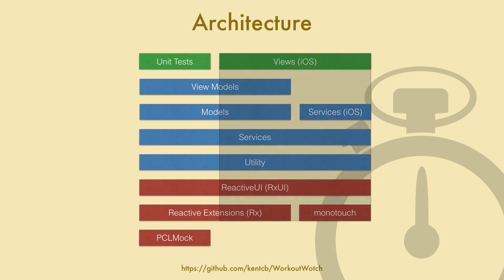Now I also wanted to point out that the diagram is arranged roughly in vertical slices that depict dependencies. So for example, at the top we've got the views, and if you travel down you'll see what the views depend on — you can see that it depends on view models, models, services, utility, etc. You can also see that it does not depend on PickleMock, and the same is true for most slices of this diagram. But don't hold me to that — it's not perfect, just a rough representation of dependencies.